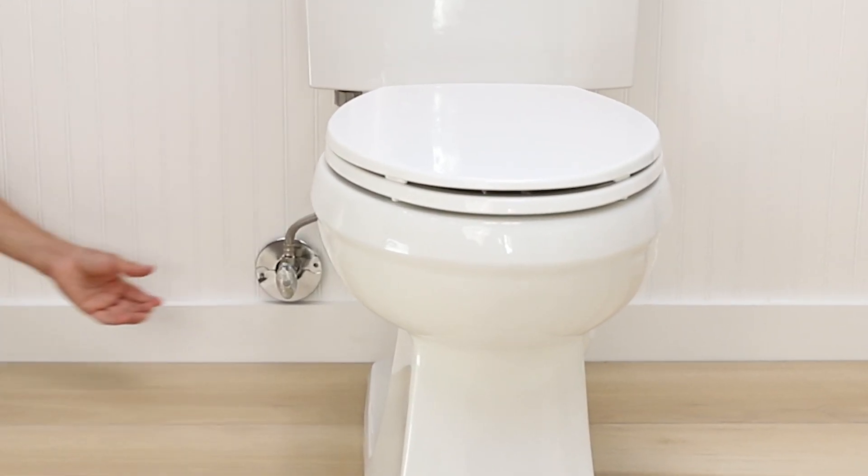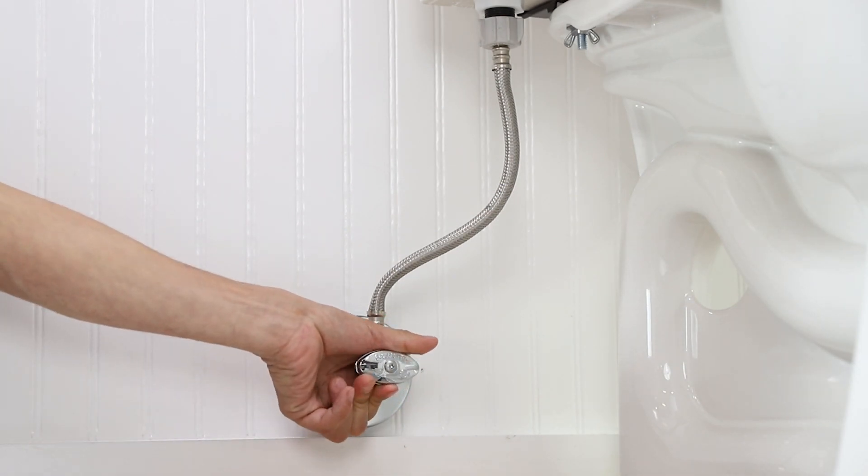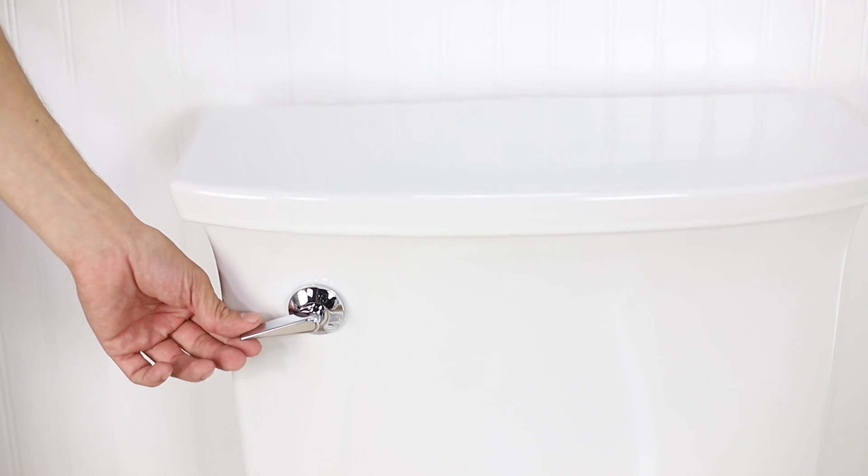Turn off the toilet water supply at the shutoff valve at the wall. Flush your toilet and hold down the flush handle until the water is fully drained out of the tank.